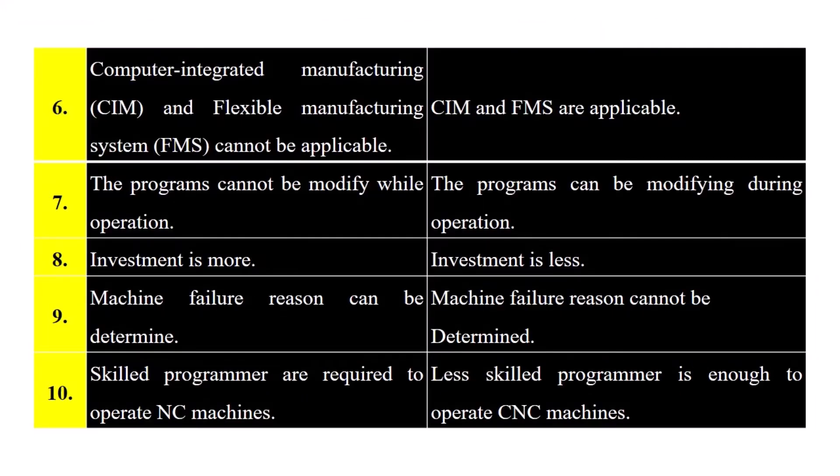Six: in NC machines, Computer Integrated Manufacturing (CIM) and Flexible Manufacturing System (FMS) cannot be applicable; in CNC machines, CIM and FMS are applicable. Seven: in NC machines, the programs cannot be modified during operation; in CNC machines, the programs can be modified during operation.